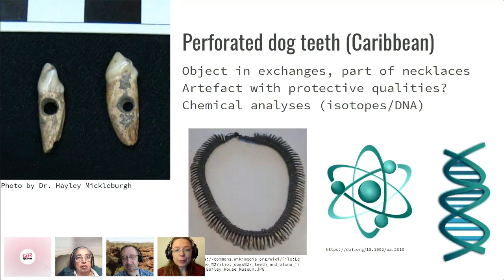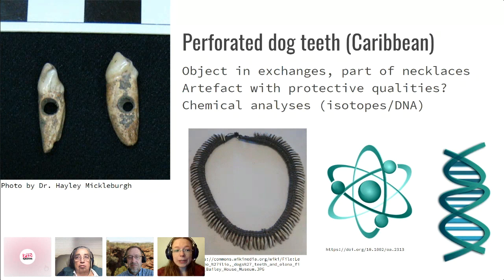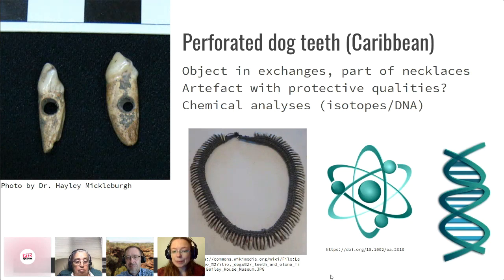My favourite part about these artifacts is actually the more technical part where we generate the numbers — the chemical analysis of these objects. We can sample part of these teeth and analyze them for their chemical composition: the isotopes or the DNA. DNA has not been published yet for dog teeth in the Caribbean, but isotopes have been a particularly popular topic. The way that's represented is in a sheet of numbers — so these are quite different descriptions of these objects.